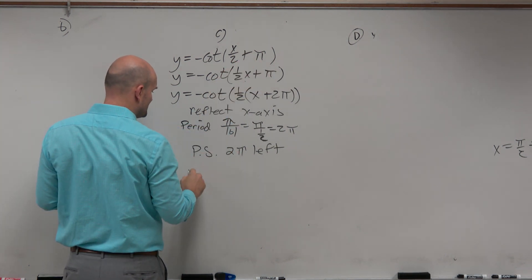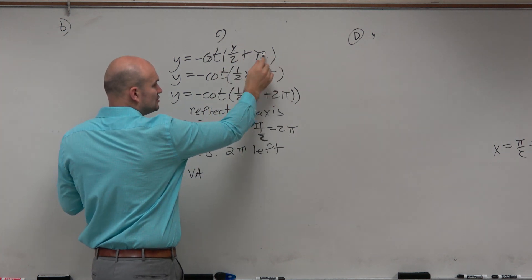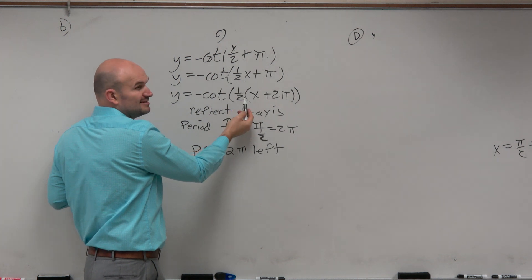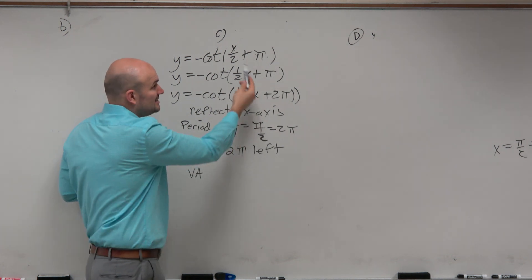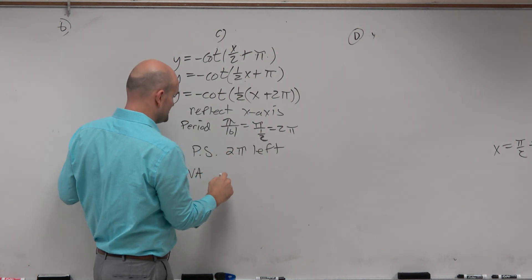So then all we're going to do for the vertical asymptote is just set our transformations. Now, could we use this? Should we use this one or this one? It doesn't really matter, right? Because I mean, these are the exact same. They're just written differently. So again, it really just kind of depends on what is not going to confuse you.